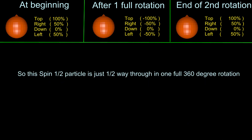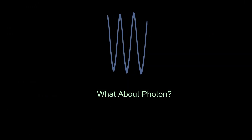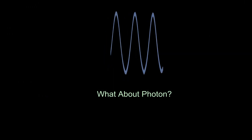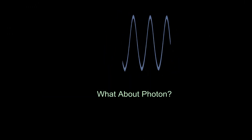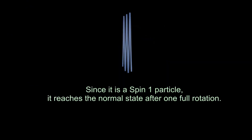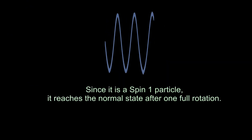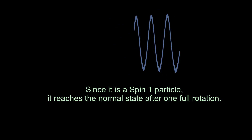So spin one-half particles are only halfway toward reaching their initial state after a 360 degree rotation. Spin one particles, on the other hand, complete the full journey back to their initial state within a single 360 degree rotation.